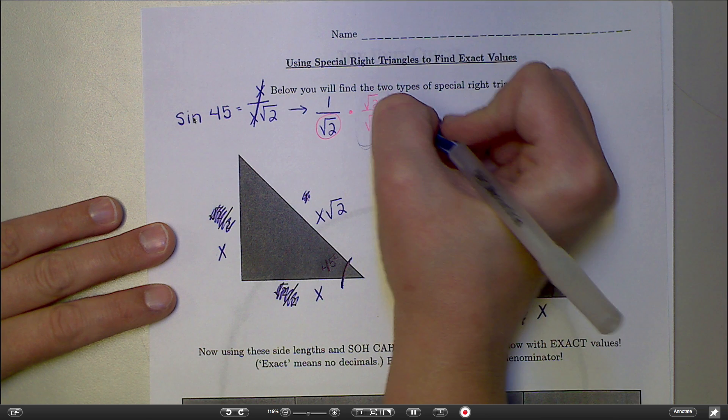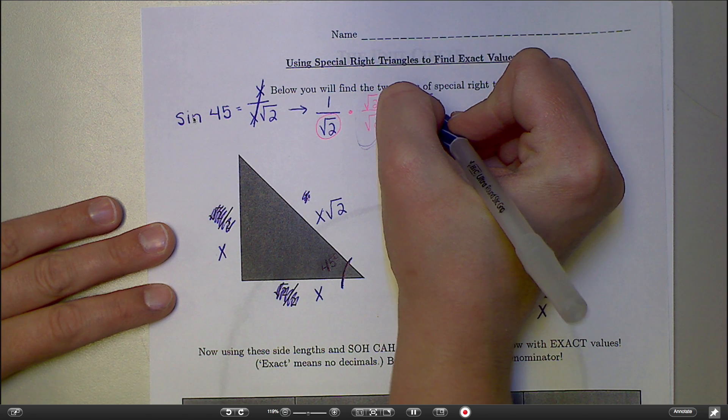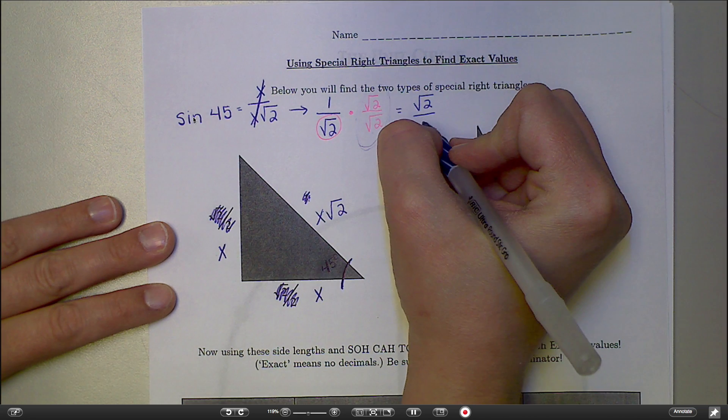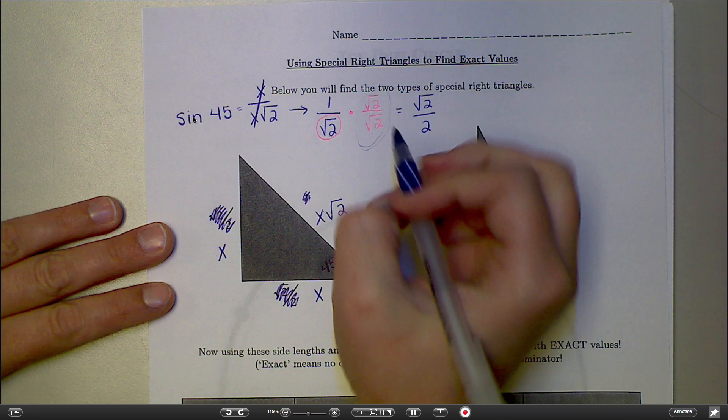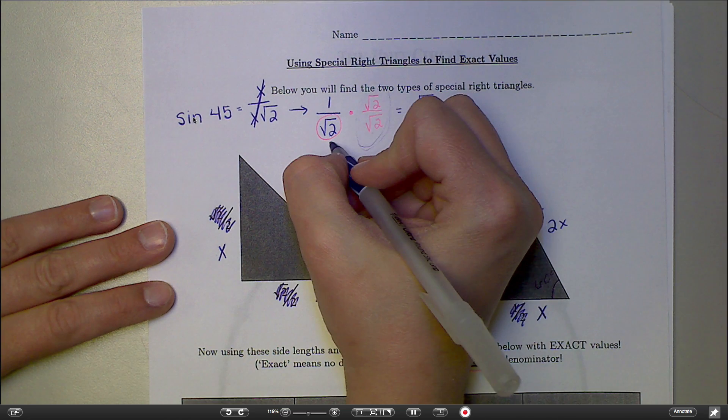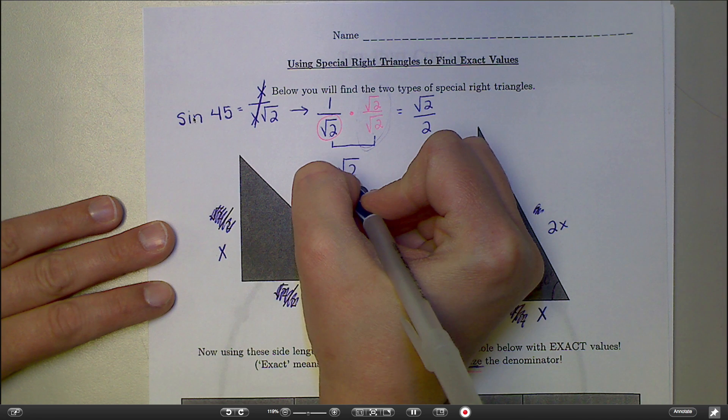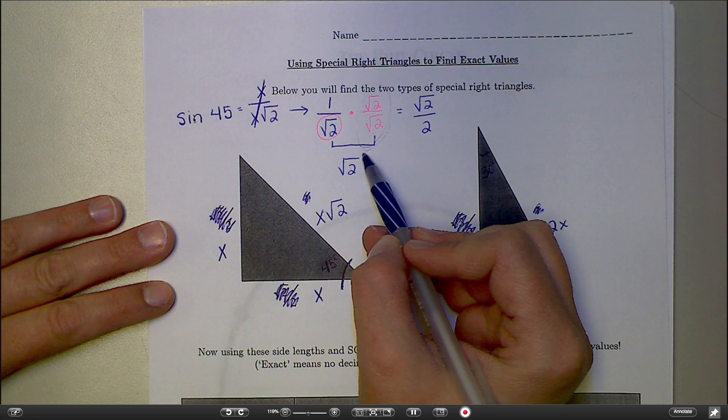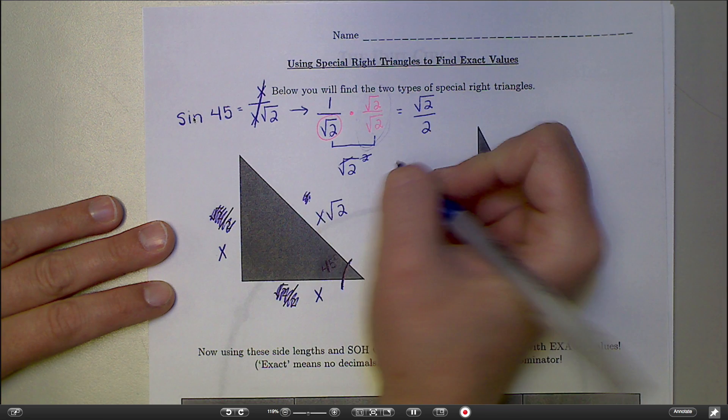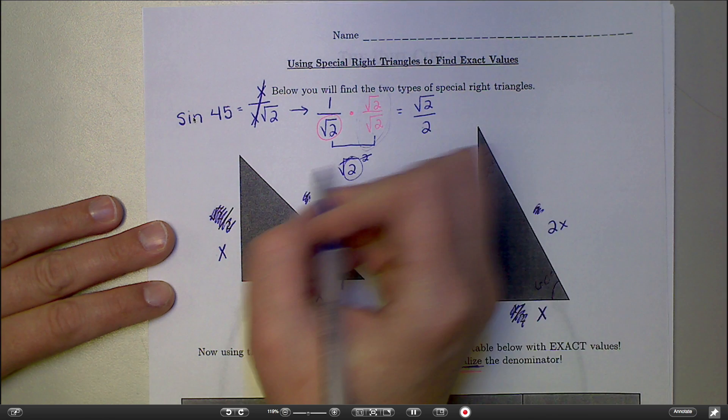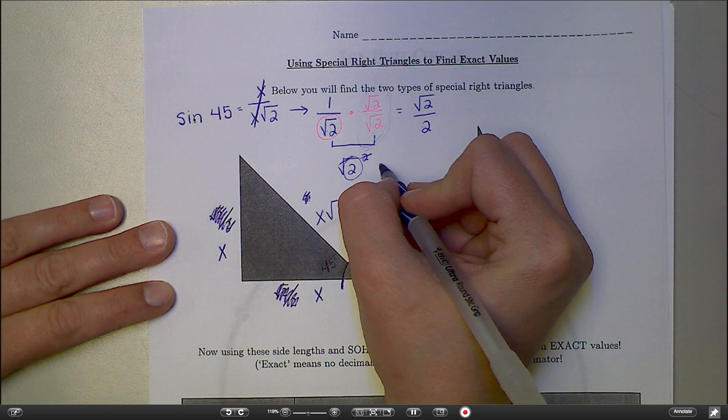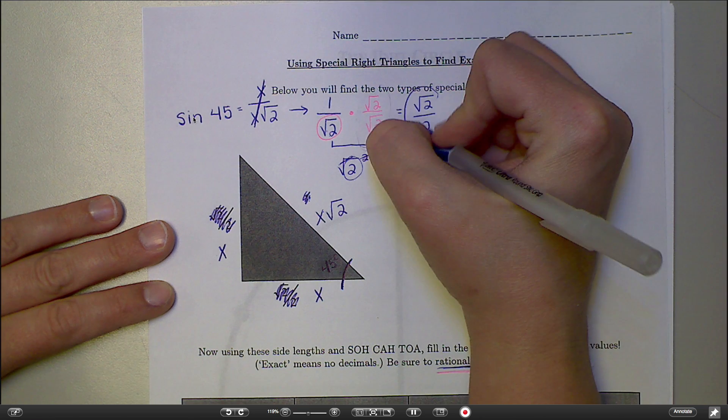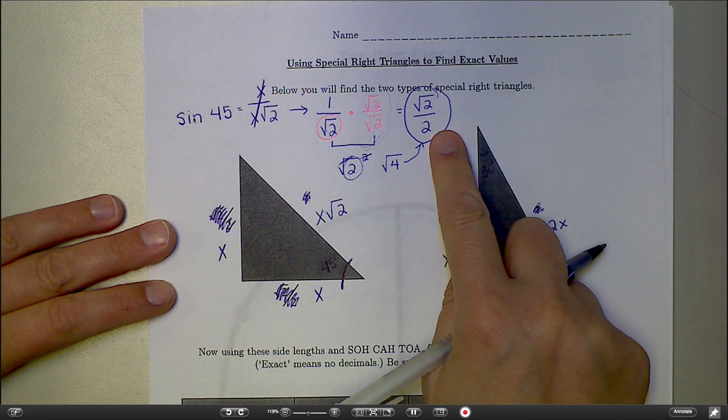So then the top here, 1 times square root of 2 would just be square root of 2. The bottom, square root of 2 times square root of 2 is going to give me just a 2. If you're not sure about that, two ways you can think about it: multiplying these two together is really like doing square root of 2 squared, and squaring a square root makes them cancel out, so you would just have a 2 left. Or you could think of it as square root of 2 times square root of 2 would give you the square root of 4, and the square root of 4 is also 2. Either way, this is what we come out with, and that's what I want you to put in your table.